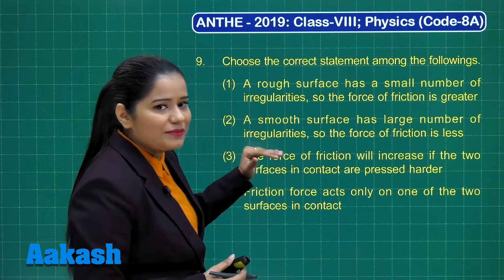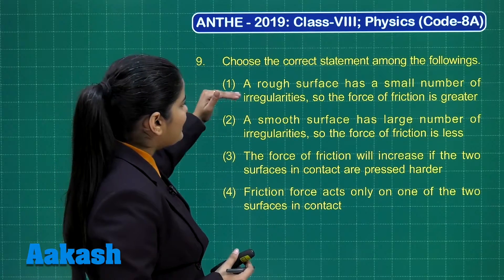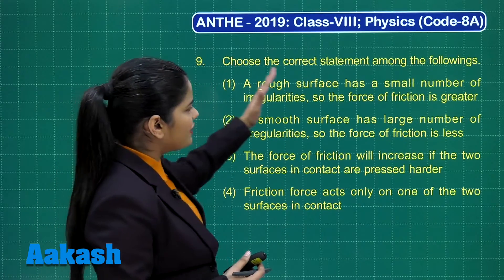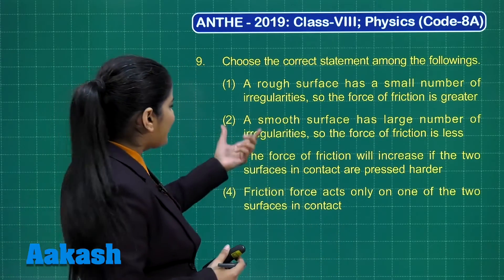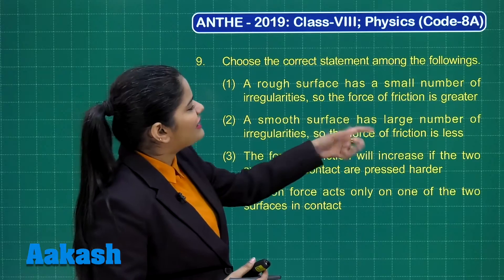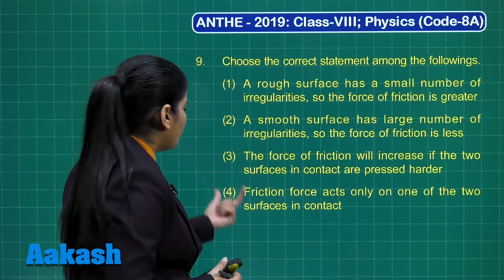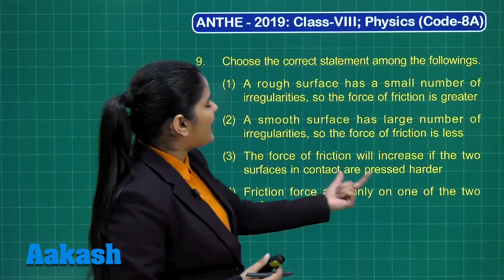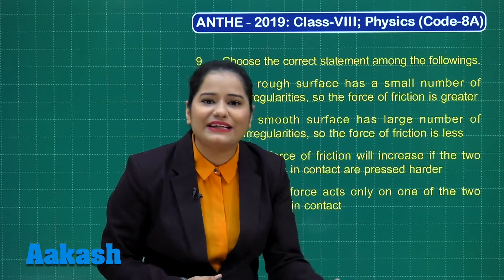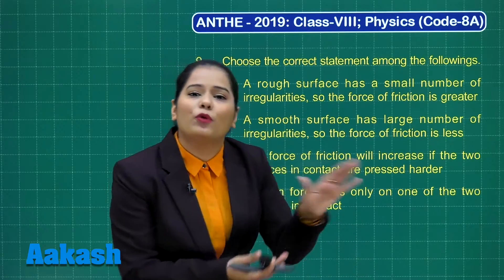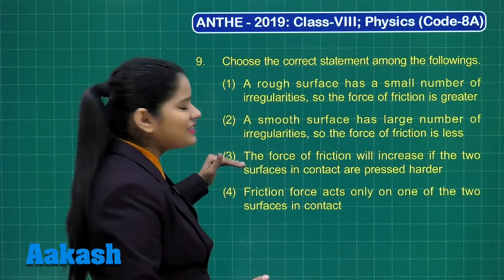Only statement three is correct. Statement one says a rough surface has a small number of irregularities — that is incorrect. Statement two says a smooth surface has a large number of irregularities — also incorrect. Statement four says frictional force acts only on one surface — that is incorrect because it acts on both surfaces in contact.